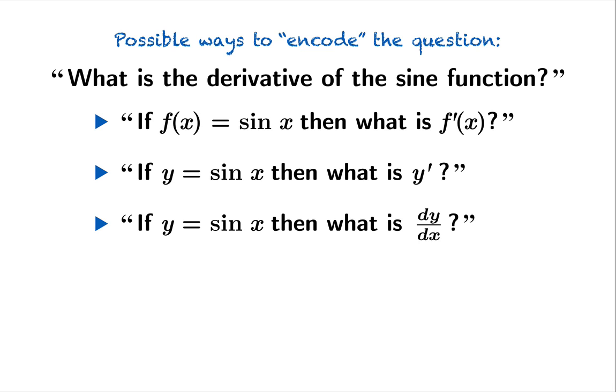Certainly, what is sine prime of x seems like a good possibility. That's nice and concise. It's the Lagrange notation with the function name sine. But, you know, truth be told, you don't see this that often. One of the possible reasons is sine squared x and the inverse sine function both use that exponent space already for very different purposes.